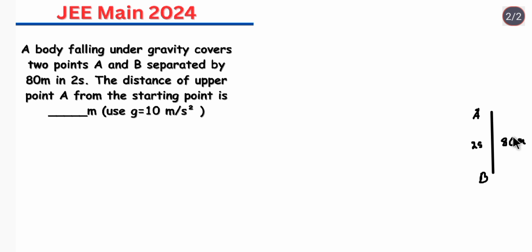Now we have to find the distance of upper point A from the starting point. So let's suppose this is our starting point P. So we have to find the distance between P and A. So first of all at the starting point P our initial velocity was 0 and suppose let at A the velocity was V1.